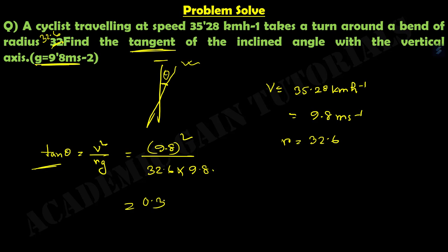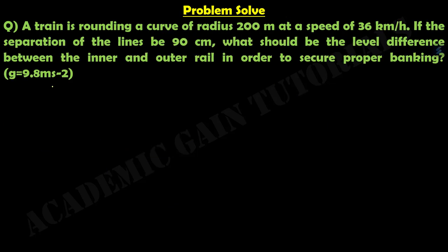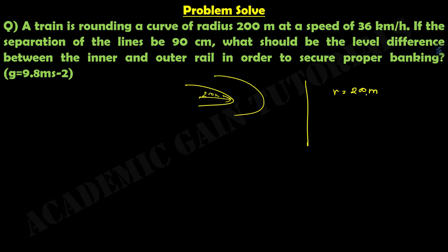This is our first problem about banking — easy to solve. Now coming to the second problem, which says that a train is rounding a curve of radius 200 meters, so r equals 200 meter. The speed is 36 kilometer per hour, so v equals 36 km/h, which is equal to 10 meter per second.